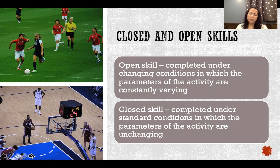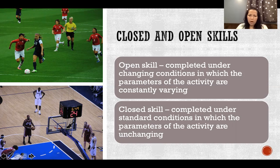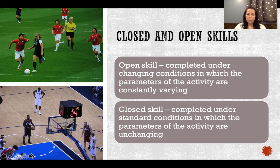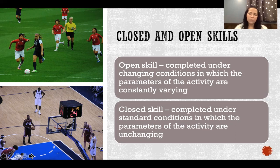A closed skill is completed under standard conditions in which the parameters of the activity are relatively unchanging. That could be like shooting a free throw or kicking a field goal. When you're kicking a field goal, maybe it's a windy day — that's a change in parameter — but more or less the skill itself is relatively the same. A free throw is a great example: you're the same distance from the hoop, everyone is positioned similarly. Parameters might change slightly, like a fan trying to distract you, but it's relatively standard conditions.